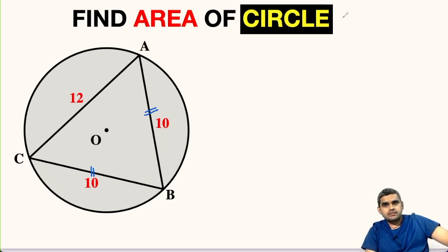We have the formula that area of any circle is equal to π times the square of the radius. So our aim should be to find the value of r.